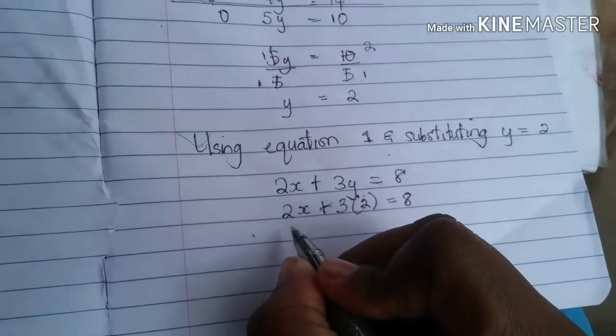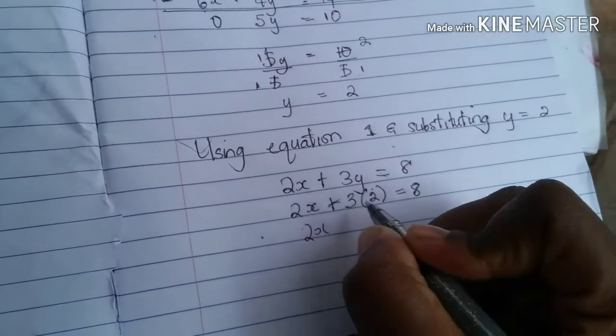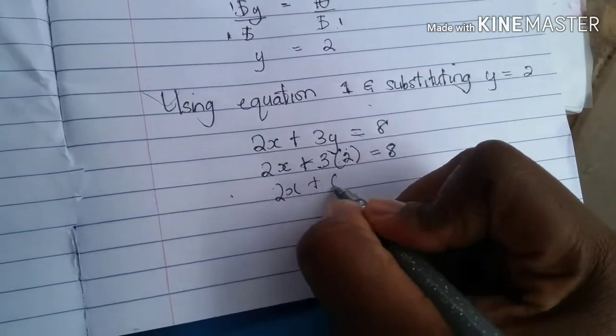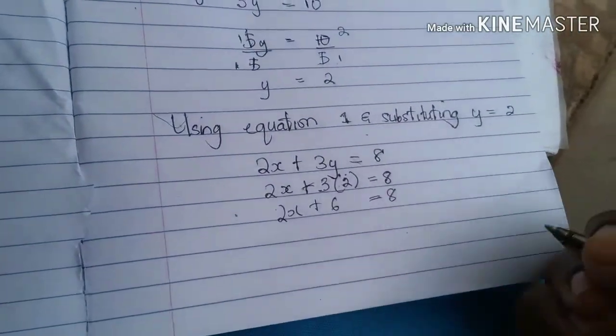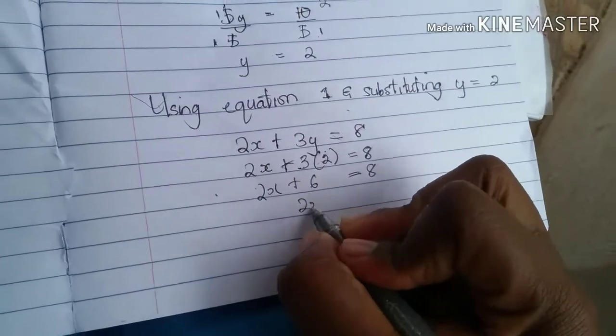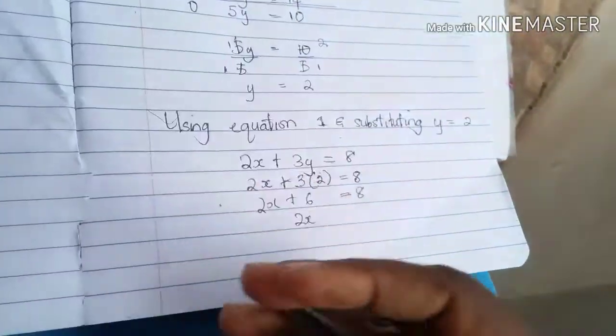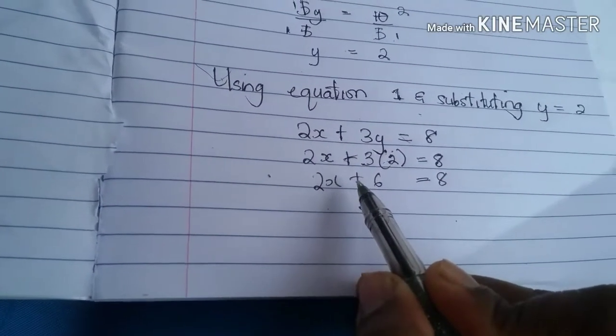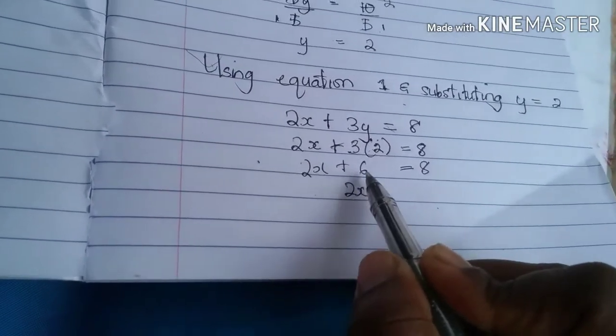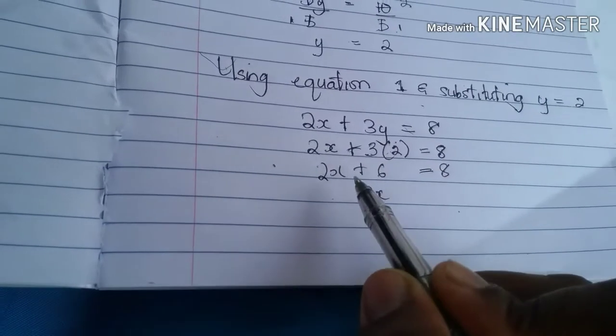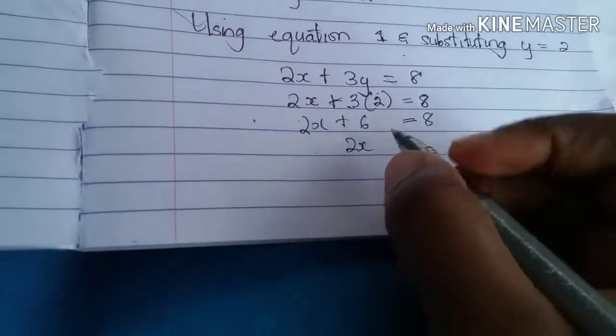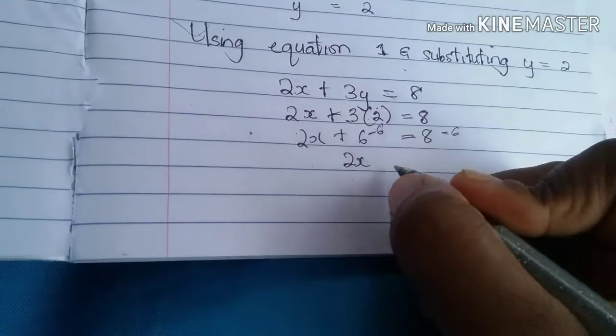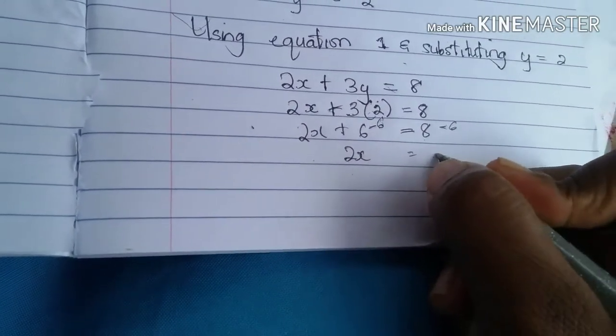Alright, so we write back our 2x. And we know that once we see a bracket it tells us to multiply, so 3 times 2. So 3 times 2 gives us 6 is equal to 8. We need to group our like terms. So we are keeping our 2x on this side. So we have 2x. We want to get rid of the 6 on this side. So we have a positive 6. And if we want a 0 we need to take away 6 from it. And to balance our equation, we need to minus 6 from both sides. So 6 minus 6 is 0. 8 minus 6 gives us 2.